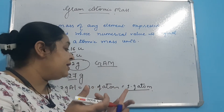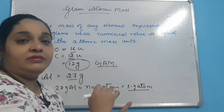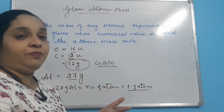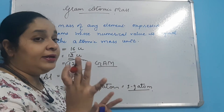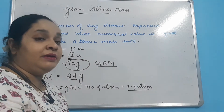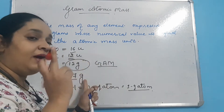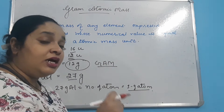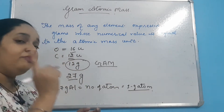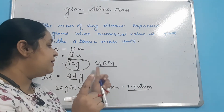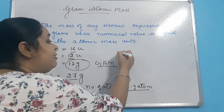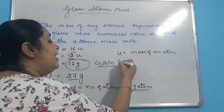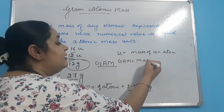Absolutely, it is having Avogadro's number of atoms. So here, gram atomic mass: kisi bhi element ka jo atomic mass hum unified mass mein express karte hain, ussi ko jab gram mein express kiya jata hai — us quantity ka jo mass hai woh unified mass ke barabar numerical value ho — use hum gram atomic mass kehenge. Unified mass kya hota hai: mass of an atom.